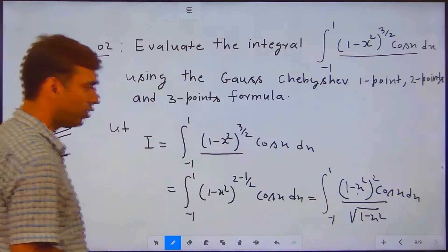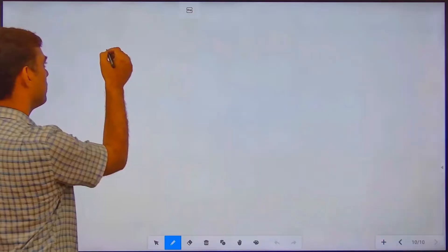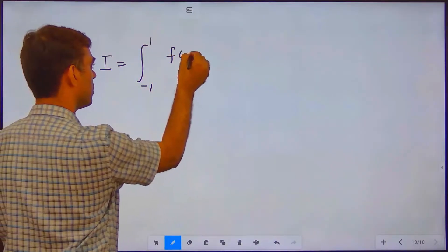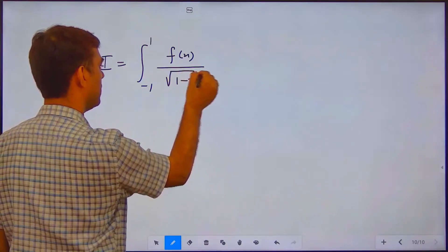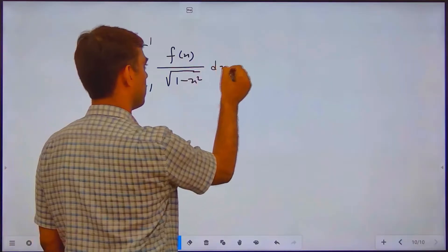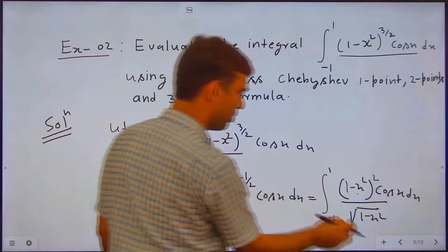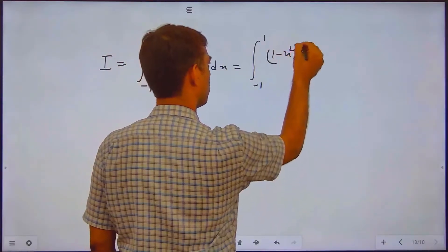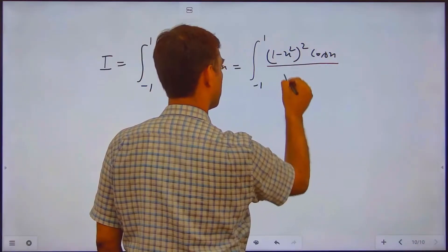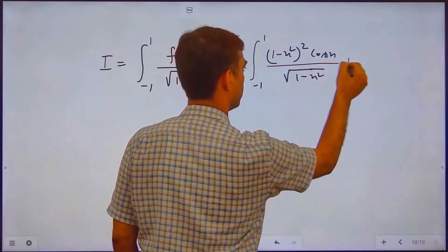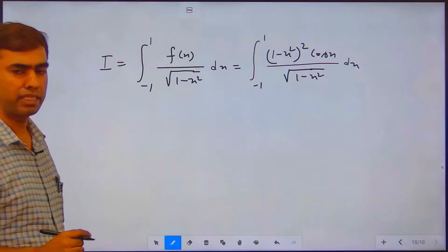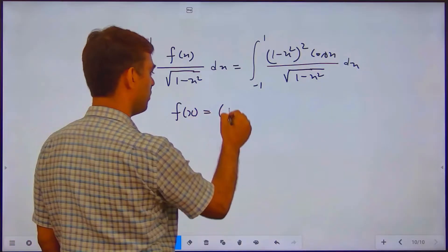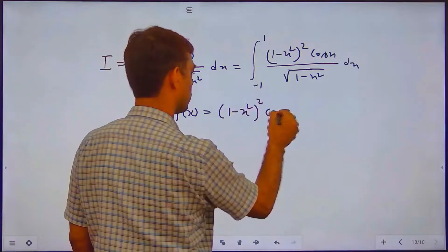This becomes the integral from minus 1 to 1 of (1 minus x squared)² cos(x) dx divided by the square root of (1 minus x squared). Now if we compare with the standard form — I equals the integral from minus 1 to 1 of f(x) over the square root of (1 minus x squared) dx — then f(x) equals (1 minus x squared)² cos(x).